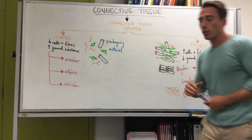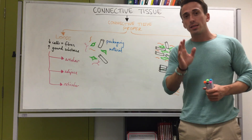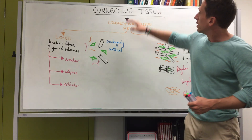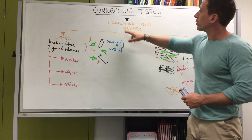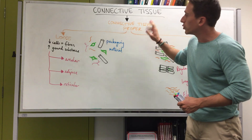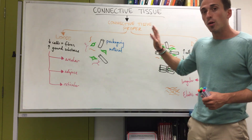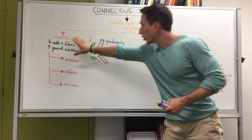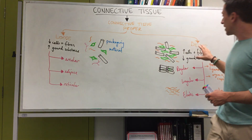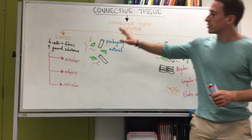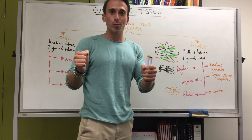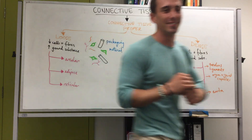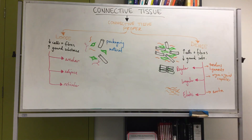Overall, this is the first subcategory of connective tissue — connective tissue proper — broken up into loose and dense and then into their subcategories. Hopefully that helps.